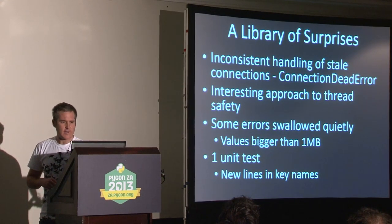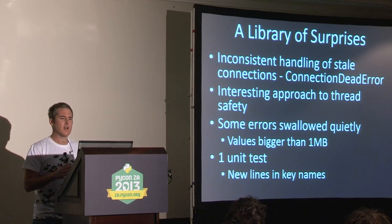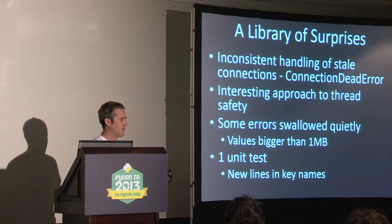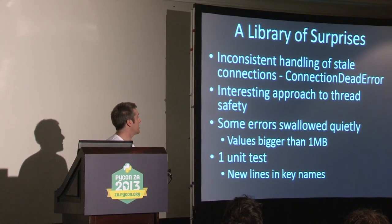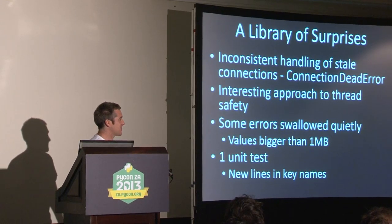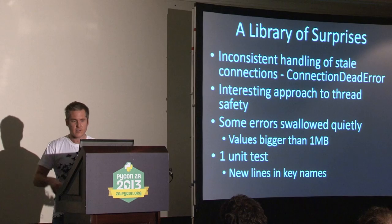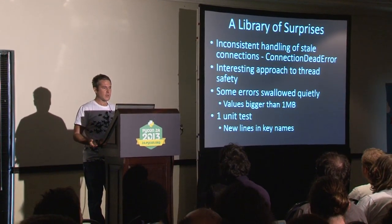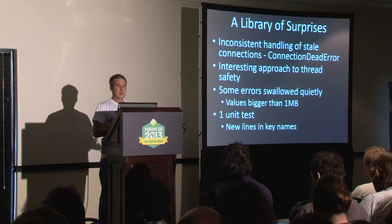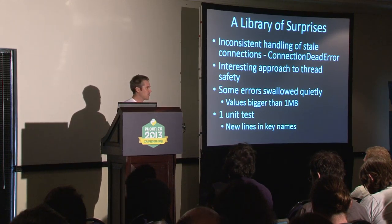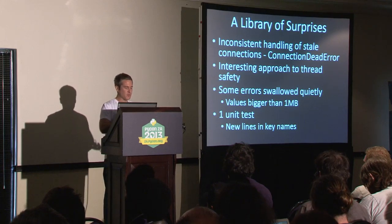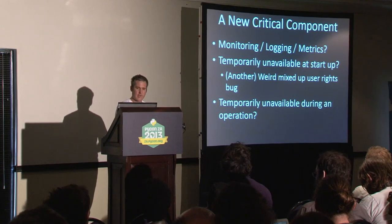Having something in the wild for a while, you start to bump into other things. We found in our client library a few surprises: some inconsistent handling of stale connections — we had one system not used 24/7, left unused for about 12 hours, and in the morning when people started using it again they'd see a 'connection dead' error; you had to restart all our services to bring it alive again. An interesting approach to thread safety — look for yourself in python-memcached. Some errors were swallowed without raising exceptions, which annoys me. And one unit test. There have been one or two bugs introduced — most recently, newline characters are important in the Memcached protocol, and if you had a newline in your key name it used to warn you, but now it just breaks the protocol.